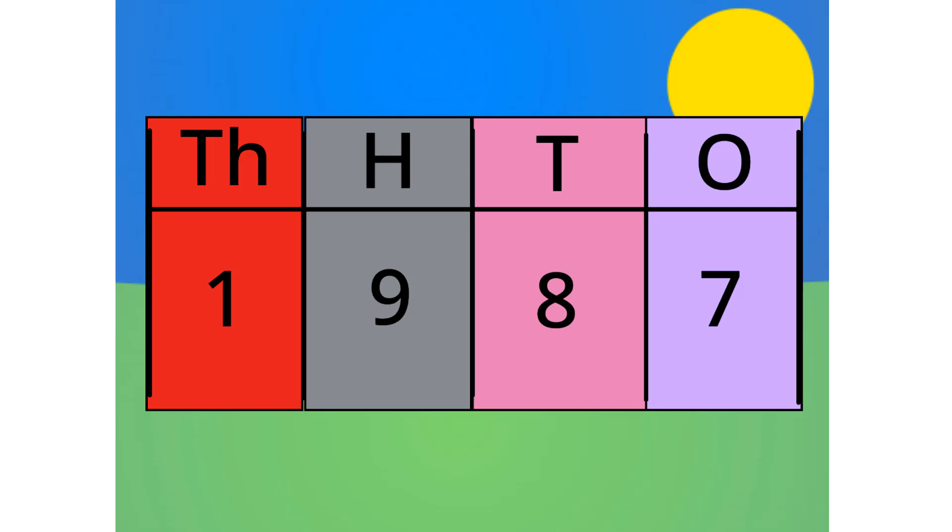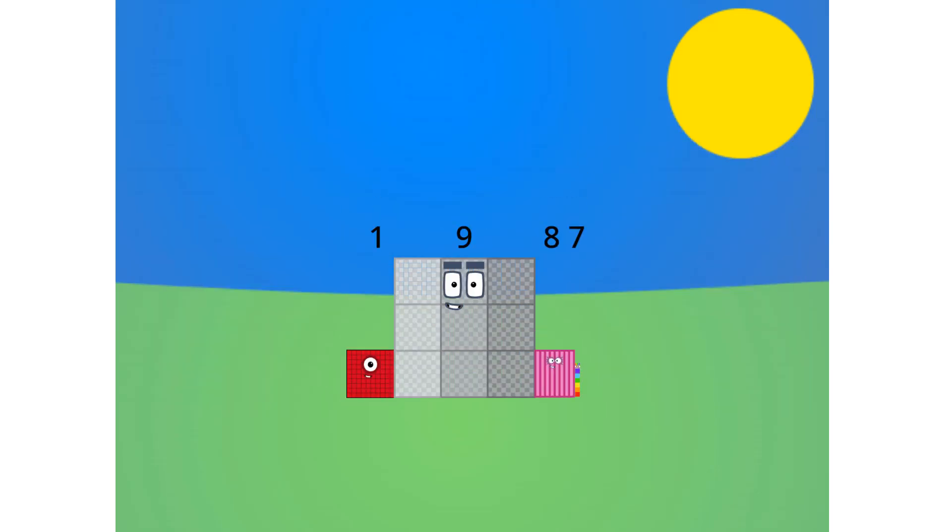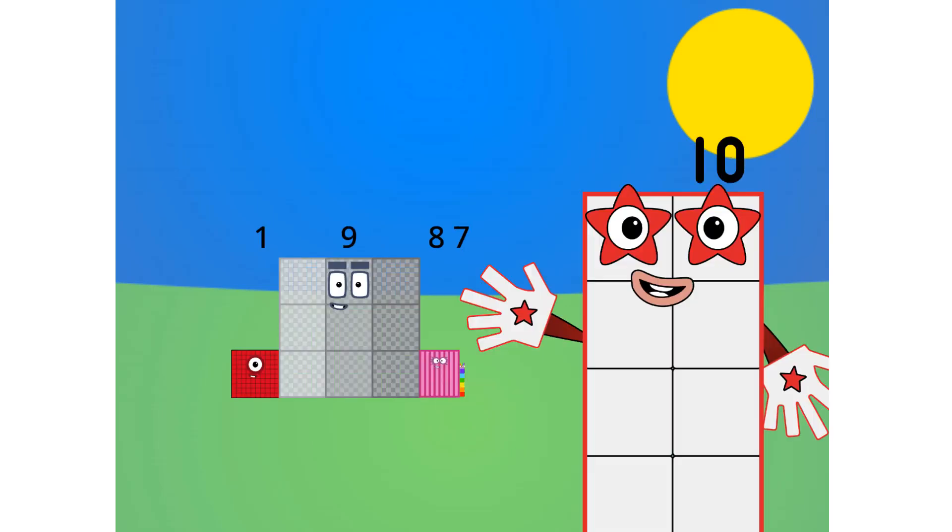Let's see this in block form, shall we? As you can see, this number is 1,900, 8 tens and 7 ones. Let me carry on with the first method.